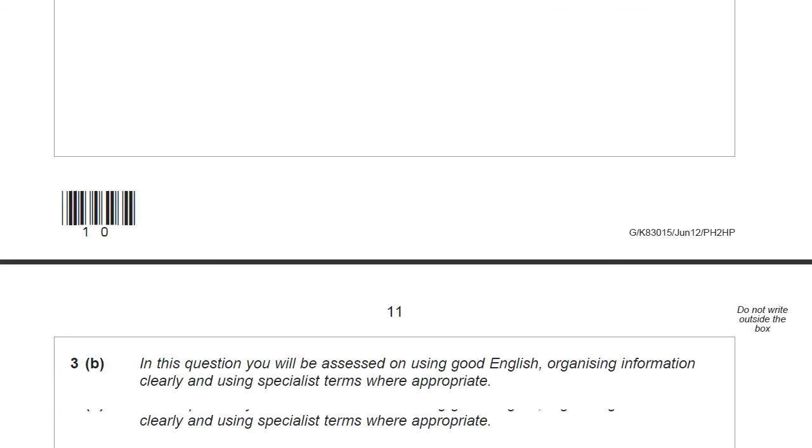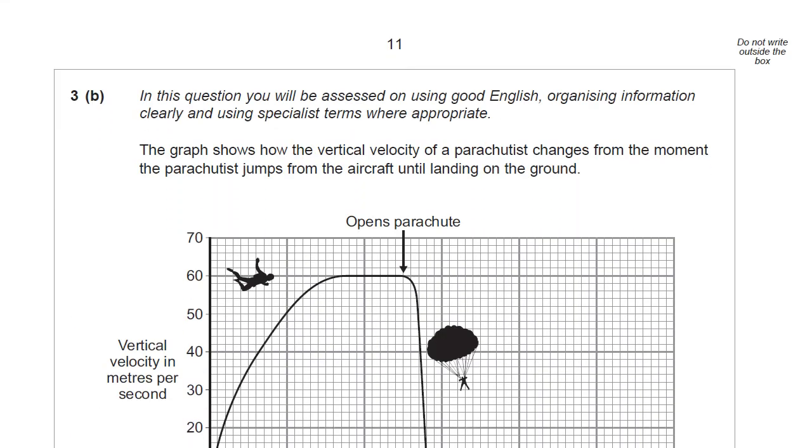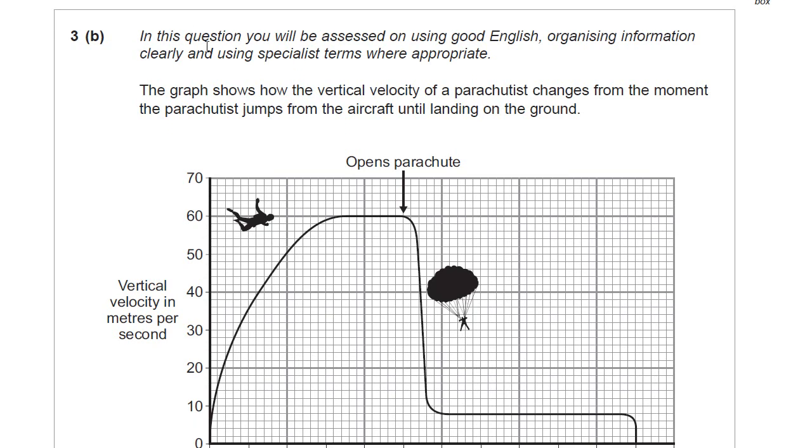This next one is one of the quality of written communication questions. It's a six mark question, and you'll always see this little bit of writing: In this question you'll be assessed on using good English, organizing information clearly, and using specialist terms. I want you to focus on this bit here. This is the bit that is most easily corrected. Good English though, I'll just say this, does not mean a nice expressively written bit of prose, or anything that you would normally see in an English language exam. It is expressing things clearly, expressing arguments clearly, not writing very interesting prose, just writing clearly.